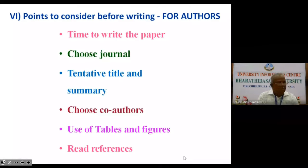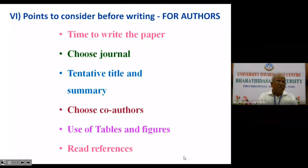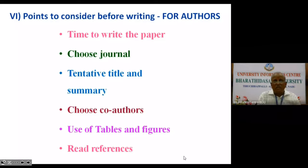Just because a journal is available, you should not take it for granted to submit your paper. Then, tentative title and summary — this is very important. You should give a tentative title and start writing the paper. After completion, you should be ready to make necessary changes to the title, because you cannot always complete the paper exactly as the title suggests. The title is always subject to change, so you should be flexible.